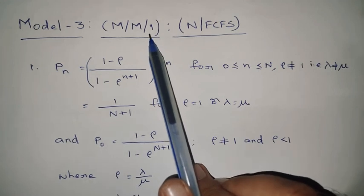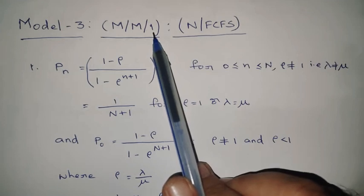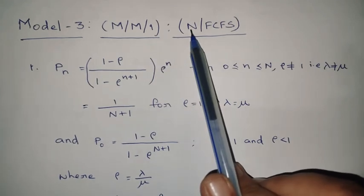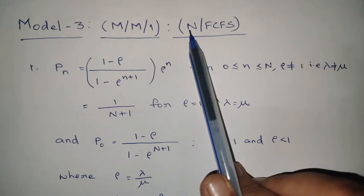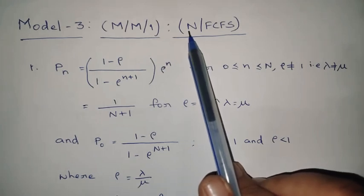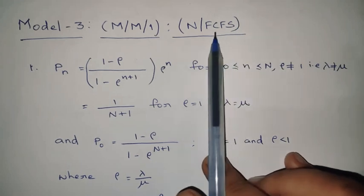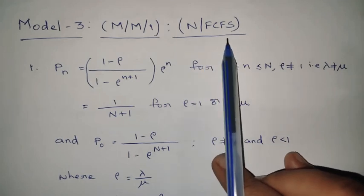The number of servers is represented by S, which equals 1. Capital N means we can give service to only up to N customers — the number of customers for getting the service is limited. That is capital N. And the service discipline is FCFS, meaning first come, first served, or FIFO — first in, first out.